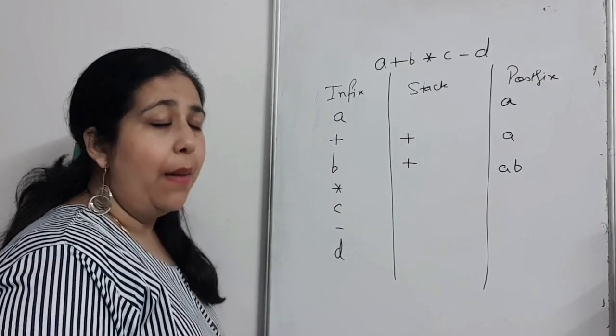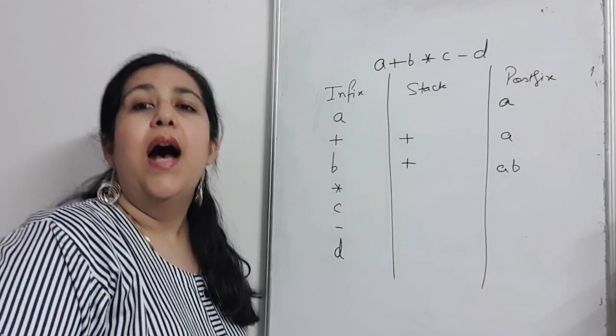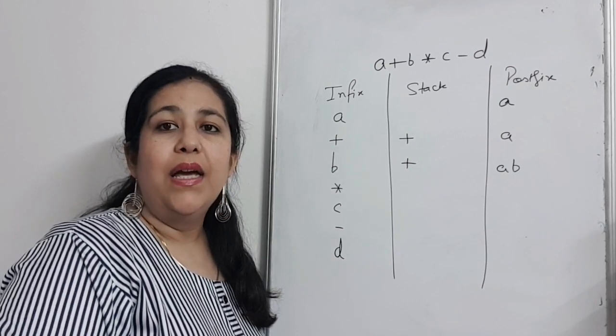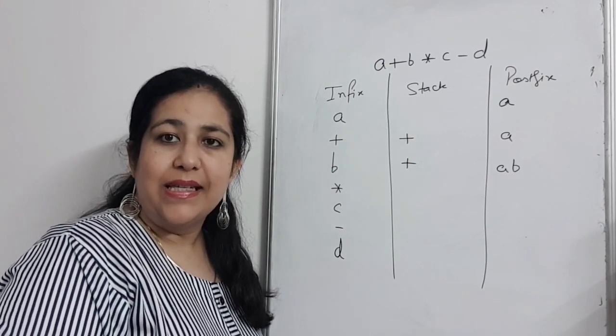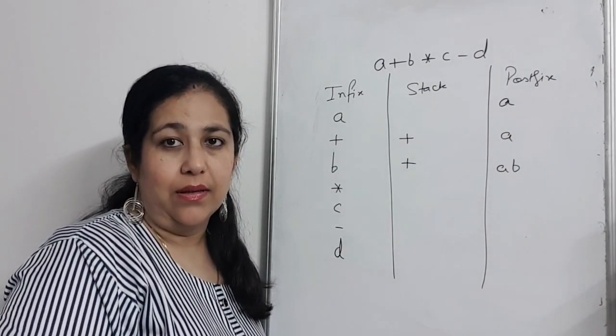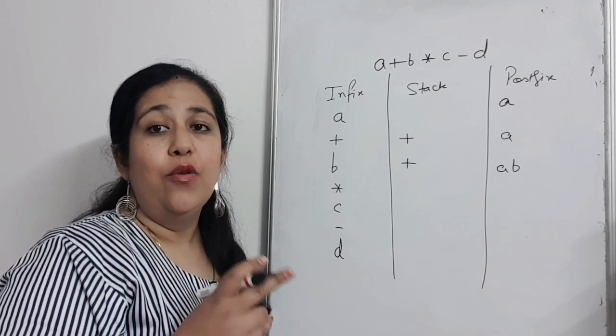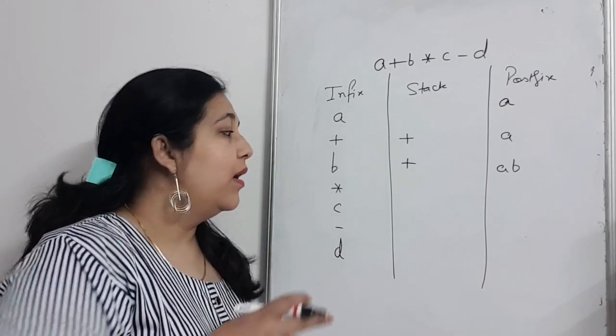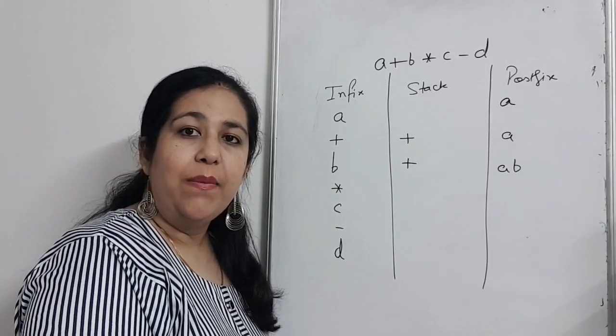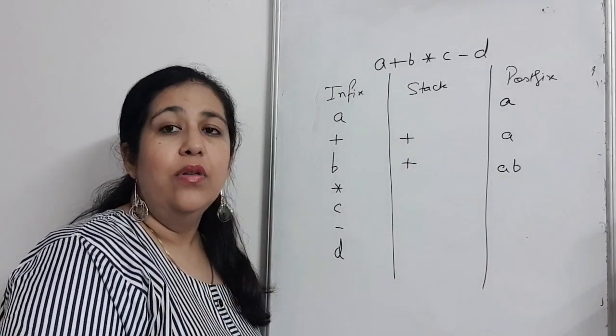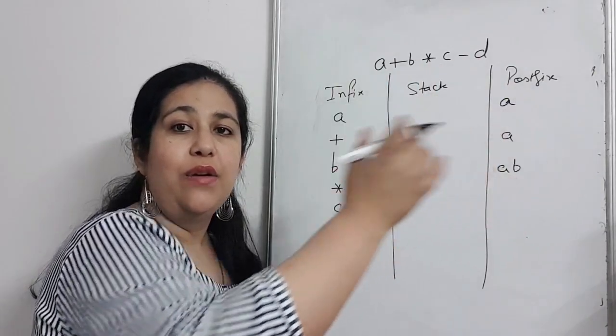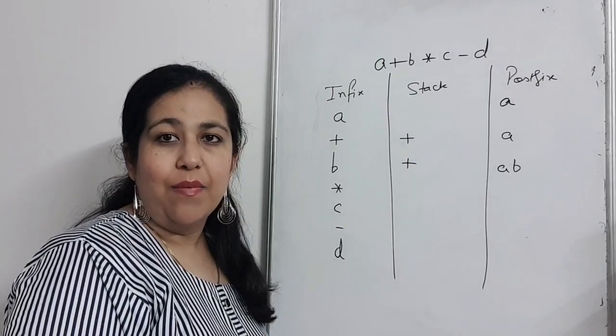Then multiply comes. Multiply is an operator, so it should go to stack. But here comes the main thing. You should check in the stack. The operator at the top of stack, if the new operator has higher precedence than the operator in stack, only then can the new operator enter. Otherwise, you have to pop. Since multiply has higher precedence than plus, multiply can enter the stack. Then C is operand, goes to postfix. Then minus comes.